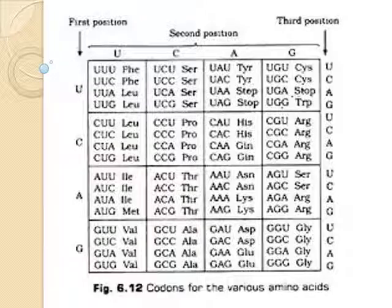Let's see the genetic code table. The complete set of relationships among amino acids and codons is called the genetic code, which is often summarized in a table. It can be seen that many amino acids are shown in the table by more than one codon. A codon means a sequence of three nucleotides which together form a unit of genetic code in a DNA or RNA molecule.